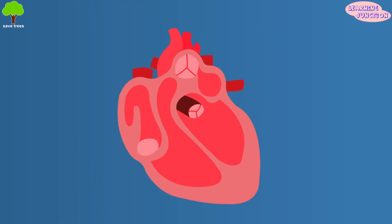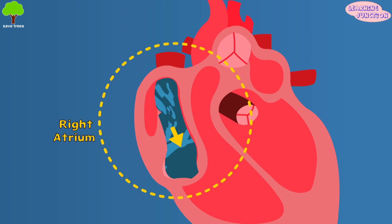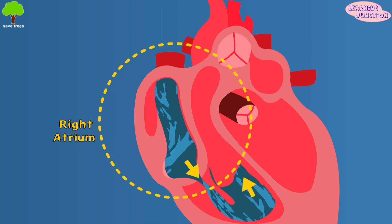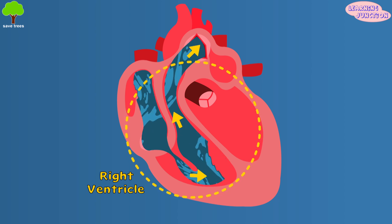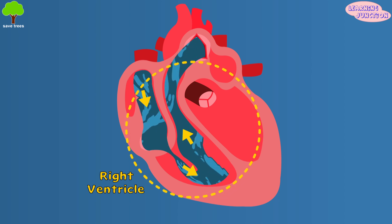The deoxygenated blood from different parts of the body enters the right atrium. It gets contracted, allowing the blood to flow into the right ventricle, which contracts with the dilation of the right atrium through the valve.